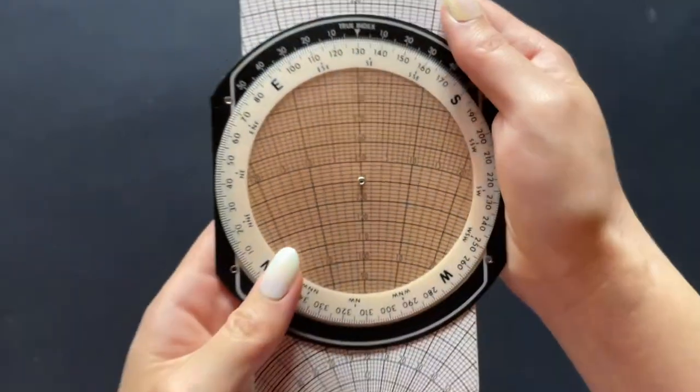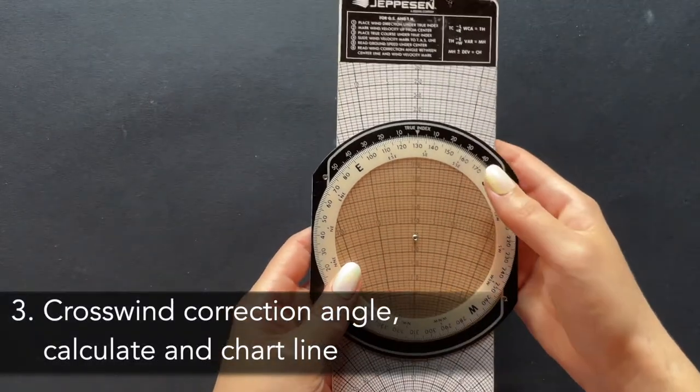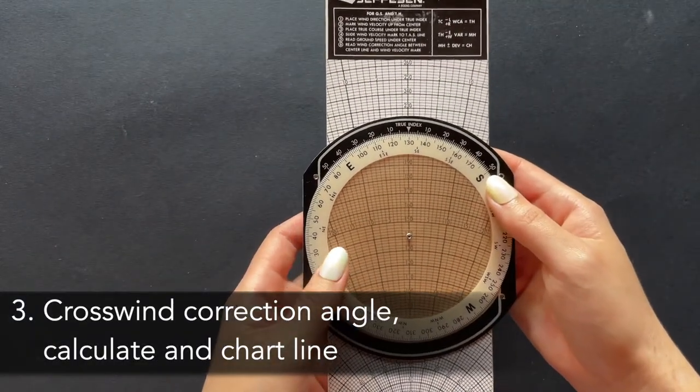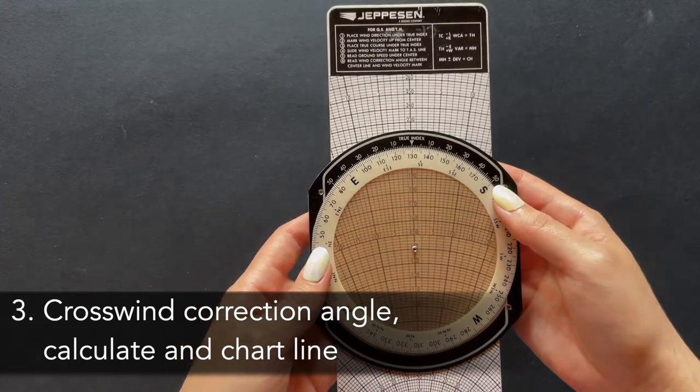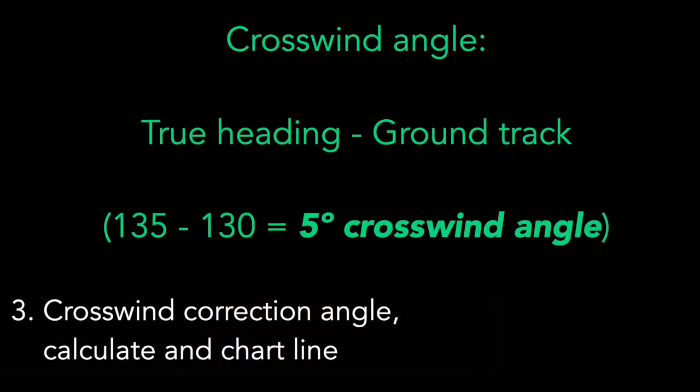Once we have that done, next step is to find our wind correction angle. This was not directly provided to us in the question, but all it takes is finding the difference between the true heading and ground track. In this case, it would be the difference between 135 and 130 degrees. That gives us a crosswind correction of 5 degrees.